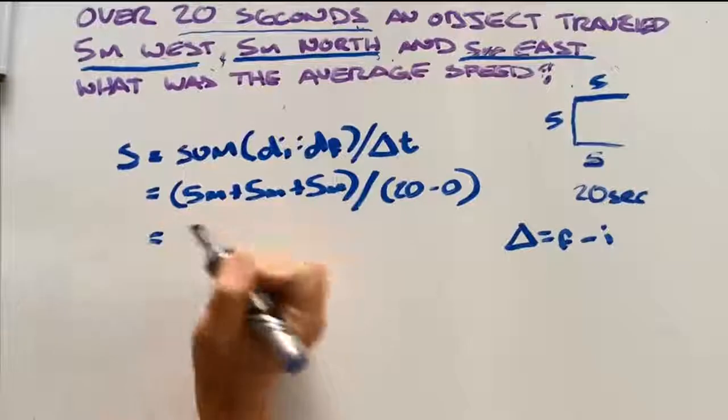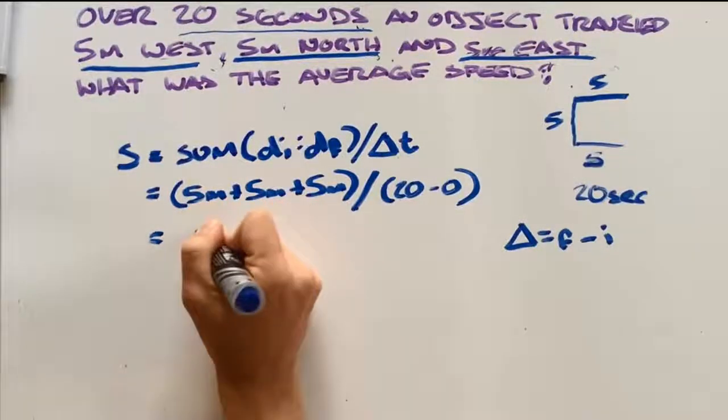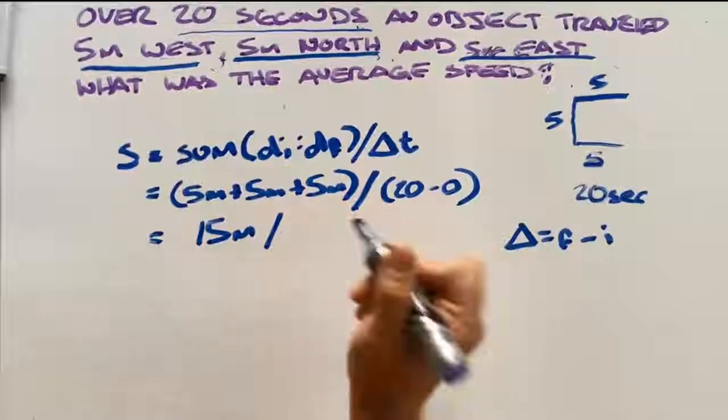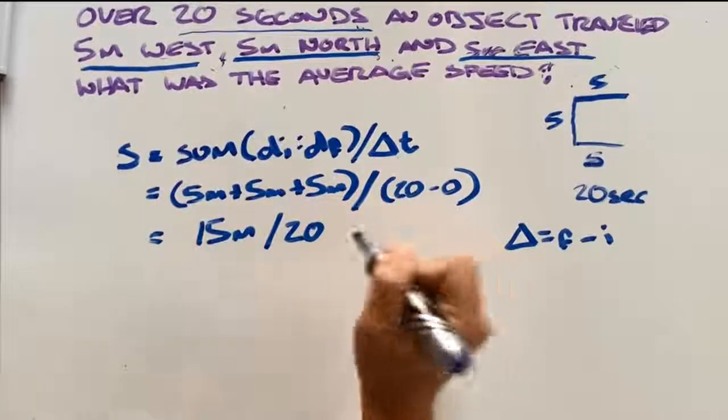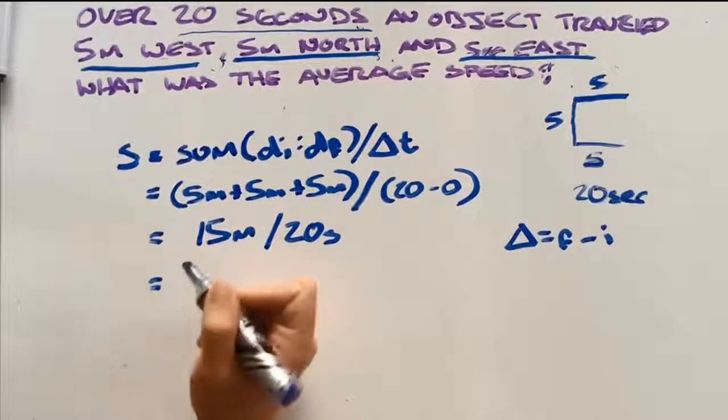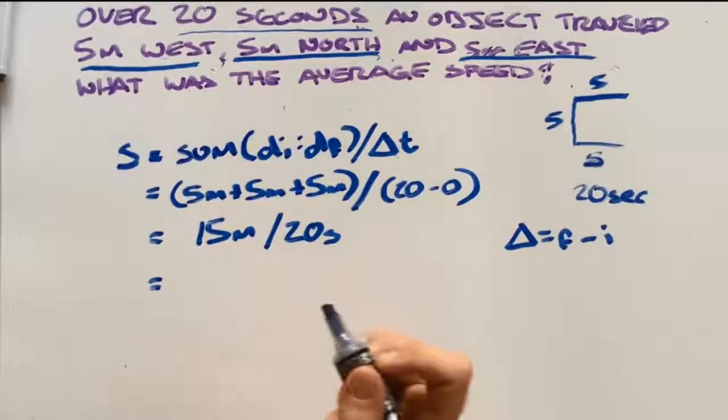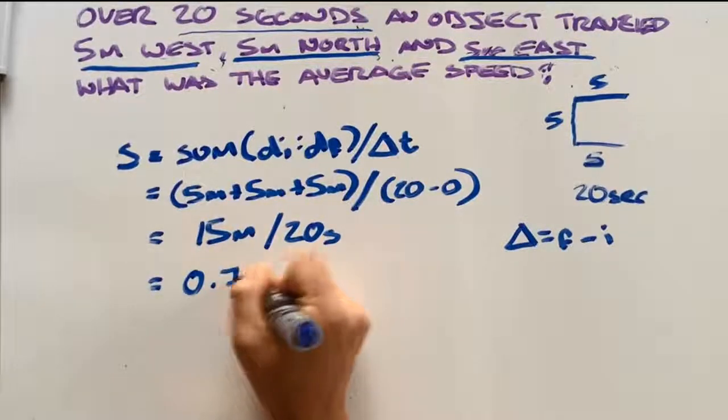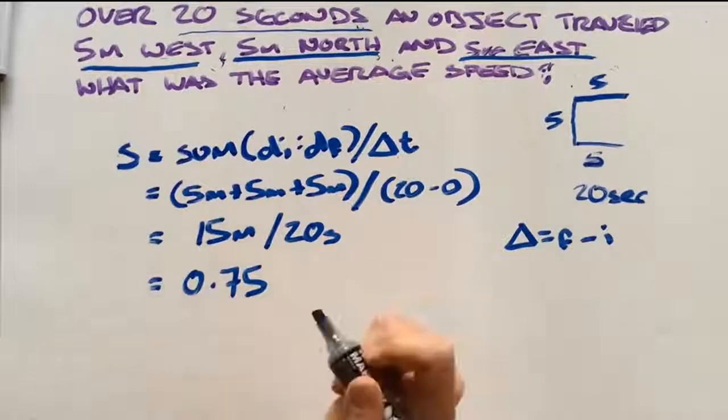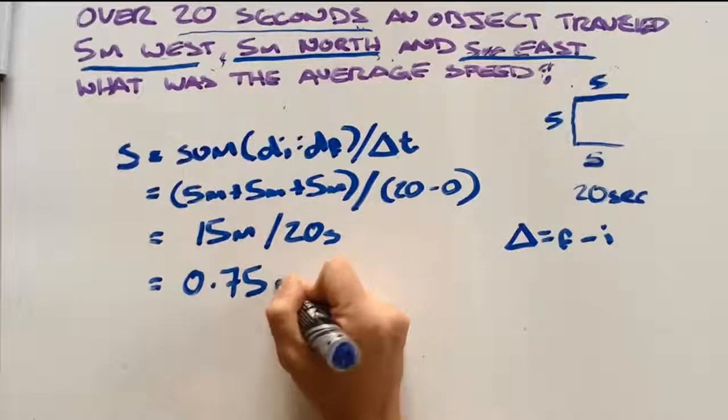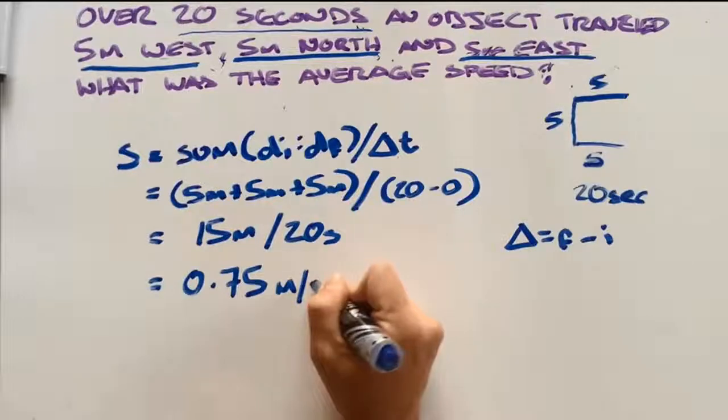We can then work this out. We have 15 metres divided by 20 seconds, which gives us 15 divided by 20, or 0.75, and our units for speed is metres per second.